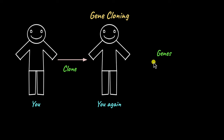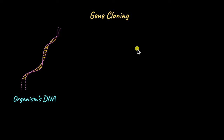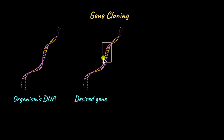Specifically, when we talk about cloning, we're going to be talking about making identical copies of specific genes. Now, how does this work? First, we need to identify the gene that we want to work with. Say this is an organism's DNA — an entire genome. In this part, we have identified a specific desired gene — it could be any gene, like the gene that codes for insulin or the green fluorescent protein.